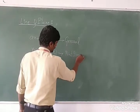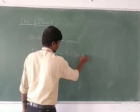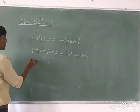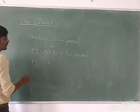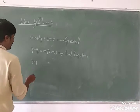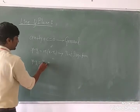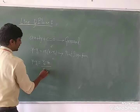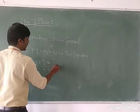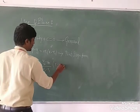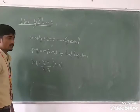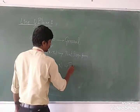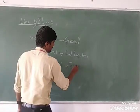We have another form which is the two-point form: (y minus y₁) equals (y₂ minus y₁) divided by (x₂ minus x₁), multiplied by (x minus x₁). This is the two-point form.